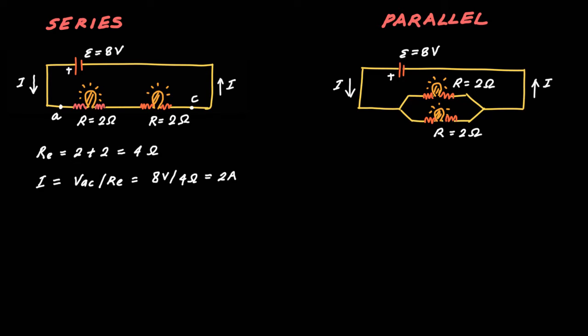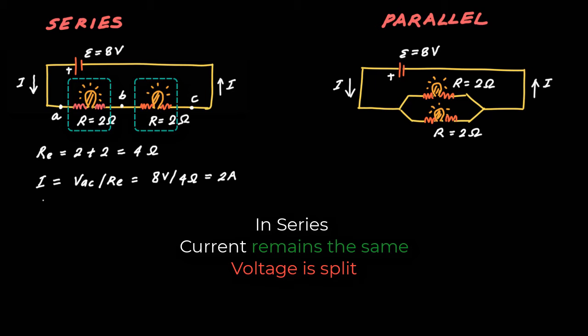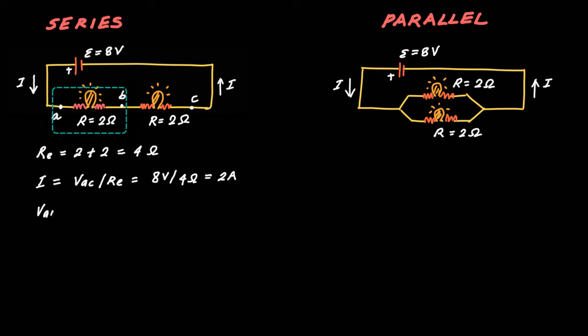The current in the circuit is 2 ampere. Now, we also know that the potential difference between A and C will get divided between the two resistances because in series, while the current remains the same, voltage gets divided in proportion of resistance values. Since each resistor is 2 ohms, we can say that VAB is equal to VBC is equal to IR, that is 2 ampere into 2 ohms or 4 volts. You see, this 8 volts has got divided equally between each bulb or resistor.